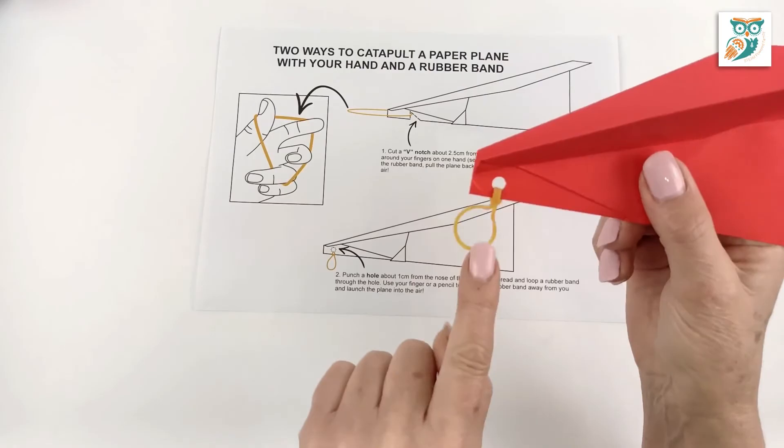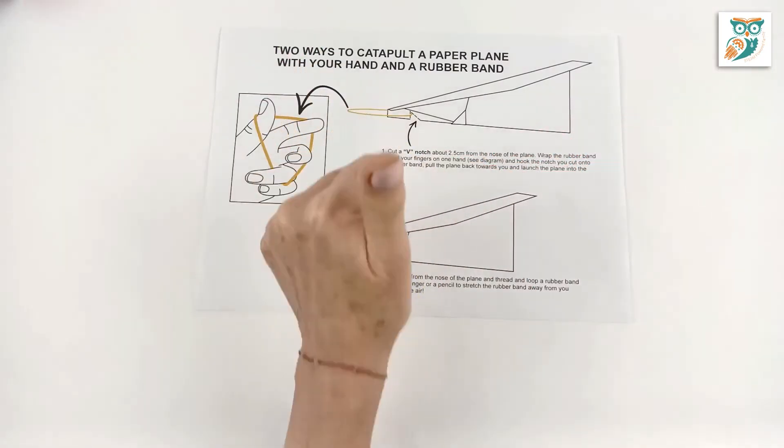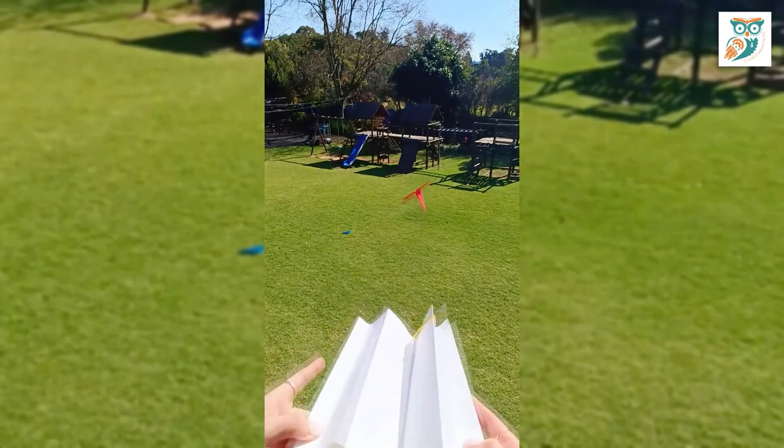Now we're going to do another idea. This one's easier if you've got younger kids. We're going to make a hole with a hole punch. So here we go. Let's watch them fly.